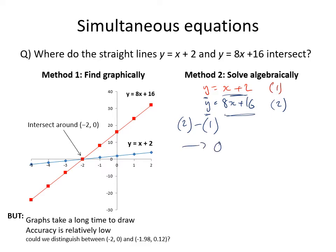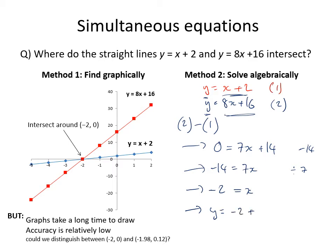Doing that, y minus y equals zero on one side, and we get 7x + 14 on the other. Subtracting 14 from both sides gives minus 14 = 7x, then dividing both sides by 7 gives x = minus 2. Substituting back into equation 1: y = minus 2 + 2 = 0.